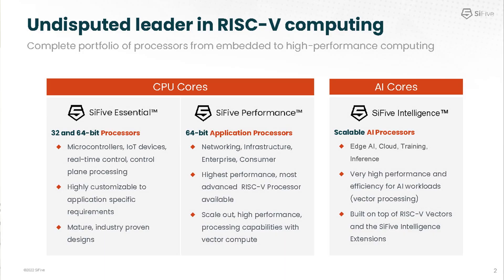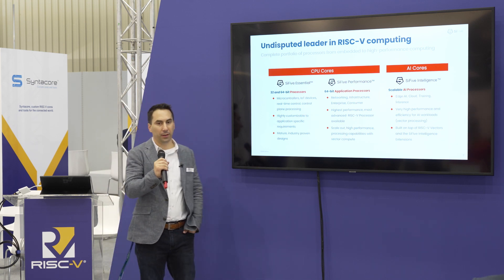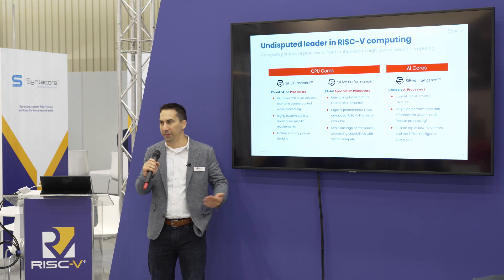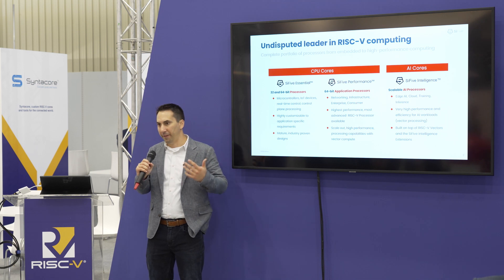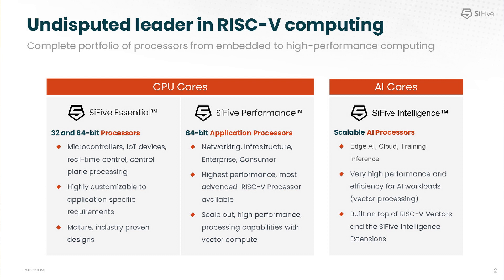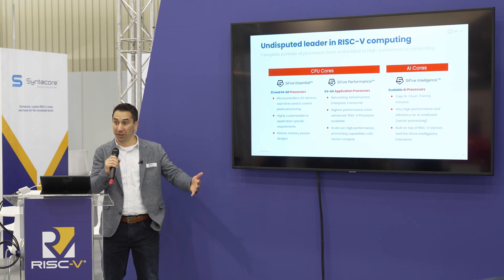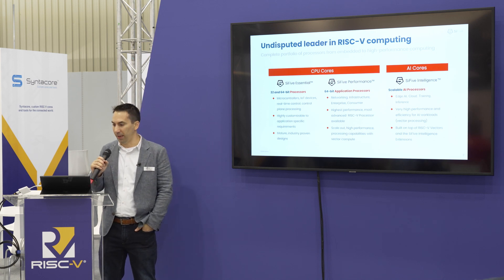We continue to invest in the Essential family, including introducing a new product in the 6 Series at the end of last year. In the middle of last year, we also launched two other product families: the SiFive Performance family and the SiFive Intelligence family. The Performance family consists of mainly 64-bit application-class processors targeting the latest performance points and feature sets in RISC-V. These are very high-performance 64-bit processors with features like hypervisors and virtualization, targeting networking, infrastructure, and consumer markets. The P550 was the highest-performance RISC-V core available last year, and we're following with the P650, made available to early architectural customers at the beginning of this year.